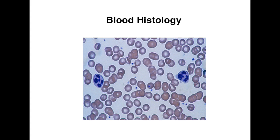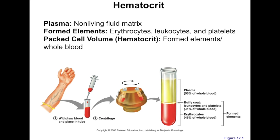Moving on, let's talk about the composition of blood, because most people think of it as just one big red fluid. But if you take blood and spin it in a centrifuge, you can actually separate its different components. This whole vial is filled mostly with plasma, which is about 55% of your total blood. Plasma is mostly water — about 90% — but there are also some important proteins floating in it, along with sodium, potassium, and other ions that dissolve in water.